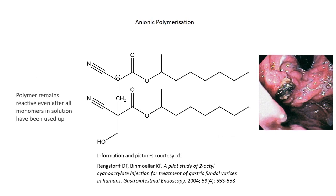2-Octylcyanoacrylate is extremely effective in halting external bleeding, as it reacts immediately with any water or nucleophile present on the skin to form a seal. A pilot study of using Dermabond to treat gastric varices found that immediate halting of bleeding occurs in 100% of cases, and that only 4% of patients experienced a recurrence of bleeding from the same cause within 11 months. However, as only 25 patients were trialed in the study, more work must be done to determine the effectiveness of Dermabond in treating internal bleeding.